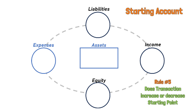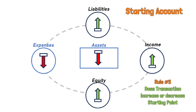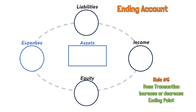Once we determine which category it belongs to, then the following rules will apply. If your starting account is an income, a liability, or an equity account, then the amount involved in the transaction must be entered as an increase or addition to that account. If on the other hand your starting account is an asset or an expense account, then the amount involved in the transaction must be entered as a decrease or reduction to that account. In the illustration, a green arrow means increase and a red arrow means decrease. Rule number six — and this is the second half of rule number five — is to determine whether the transaction adds to or takes away from the ending point.